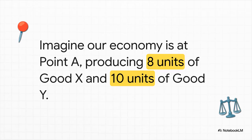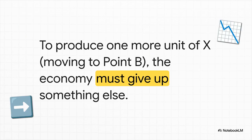So let's just imagine our economy is chugging along right here at point A on the curve. As you can see, that means it's producing eight units of good X and 10 units of good Y. And it's using all its resources perfectly. Now, what if society decides, hey, you know what, we want more of good X.